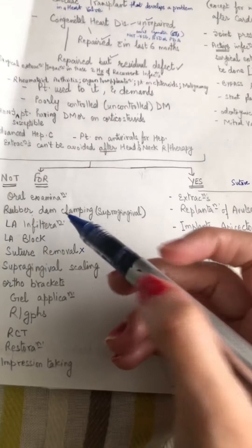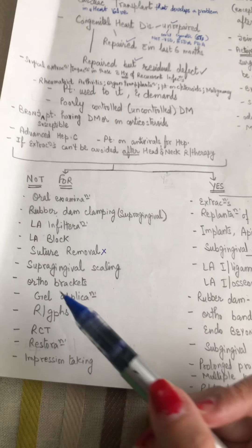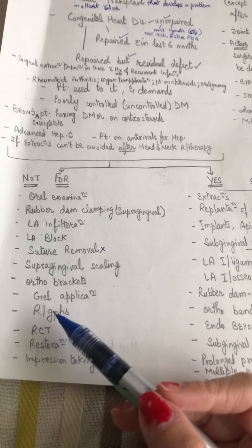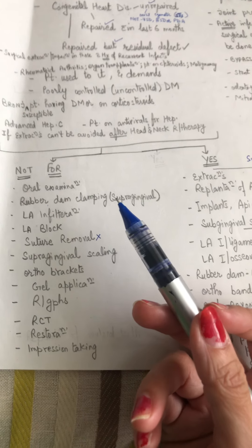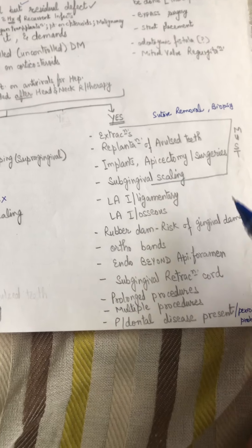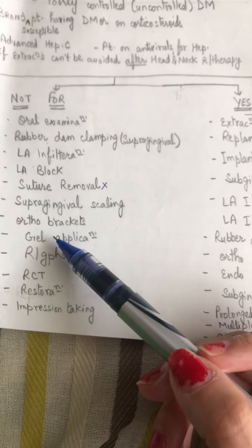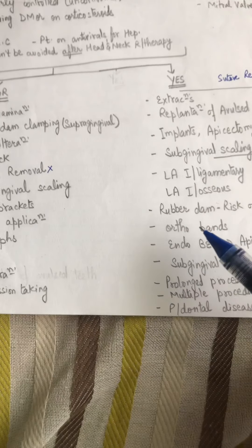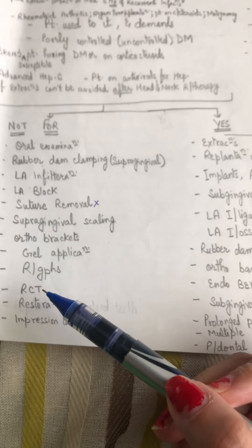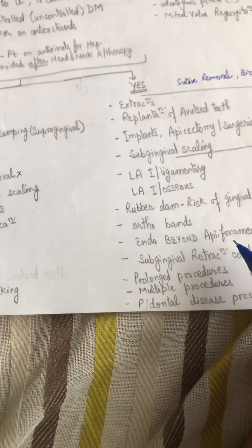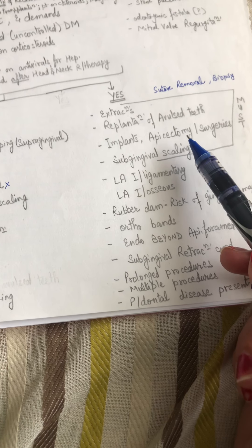Let me go through the list again. Oral examination — you don't need it. Periodontal probing — yes, you need it. Impression taking — you don't need it. Radiographs — you don't need it. Gel applications — you don't need it. Rubber dam clamping — you do not need it unless it will cause gingival damage. Ortho brackets — you don't need it, but ortho bands — yes, you need it. RCT — you don't need it, but endo beyond the apex — yes, you need it. Tooth re-implantation — yes, you need it. Apicoectomy — yes, you need it.